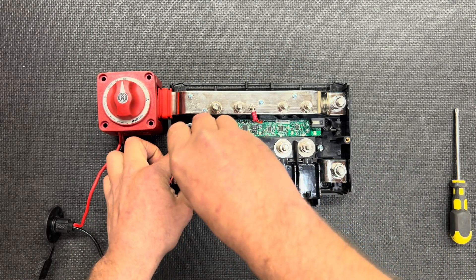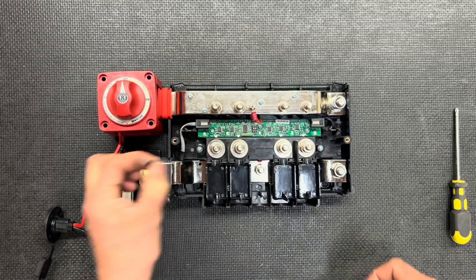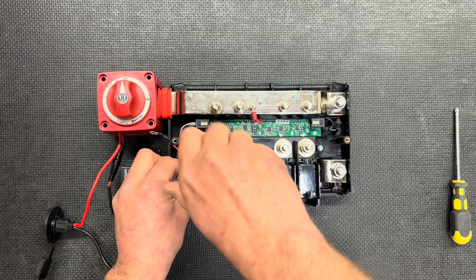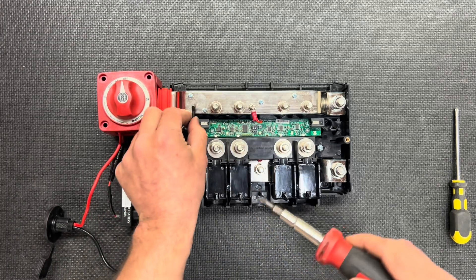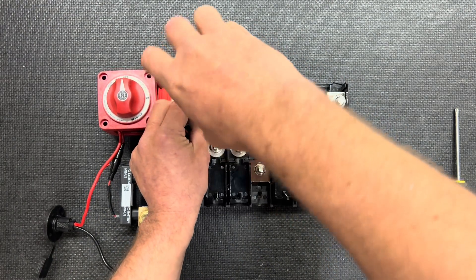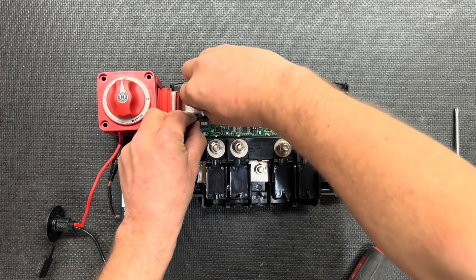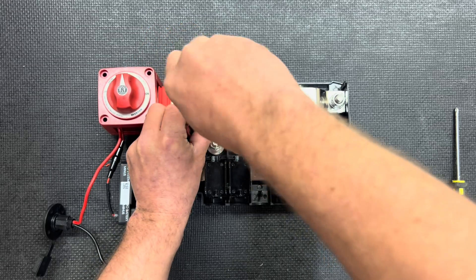Remove this screw here on your ground bus bar, flip the screw through the ring terminal attached to the black wire and screw it back in. And then we're also going to remove this one on the positive bus bar, insert the screw into the ring terminal attached to the red wire and screw it back into the positive bus bar.